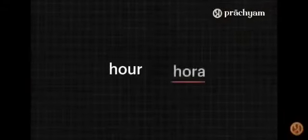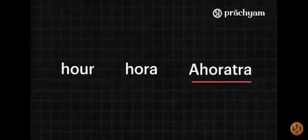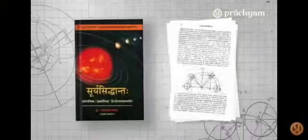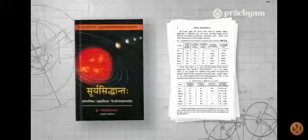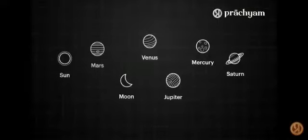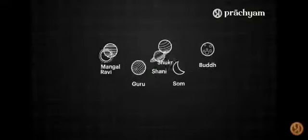The word 'hour' comes from 'hora,' but 'hora' actually comes from the Sanskrit word 'ahoratra.' There's an ancient Indian book called Surya Siddhanta — serious work on astronomy. It says: arrange the seven grahas, the major celestial bodies visible to the naked eye, from slowest to fastest.